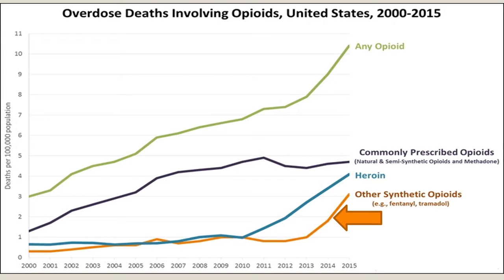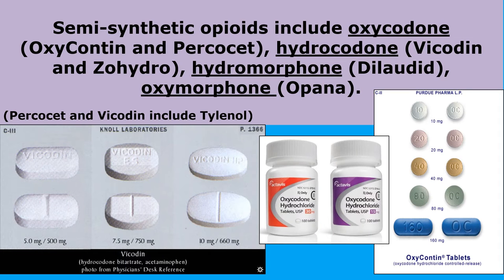Opioids like fentanyl are extremely addictive and extremely dangerous. About 50% of heroin users die from heroin, making it an extremely dangerous drug that leads to many deaths. There are many opioids used for pain relief as prescription medicines — like Vicodin, Dilaudid, and Percocet — which are semi-synthetic, meaning they're made in a laboratory but use some natural ingredient.